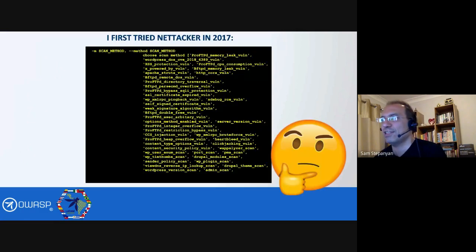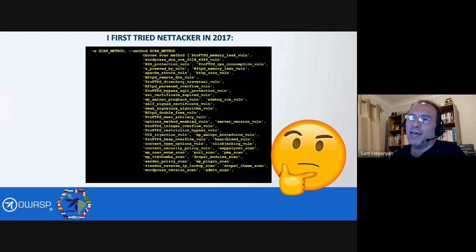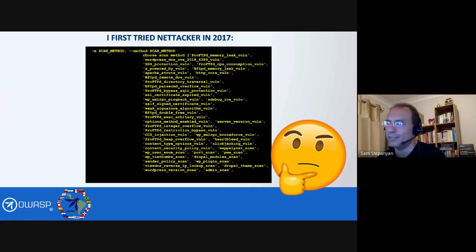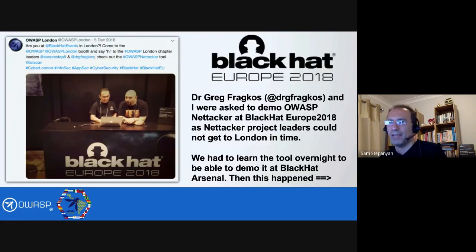I actually have an interesting history with Nettacker. The first time I tried it in 2017, I saw a new project appearing in the OWASP list of projects. I was really curious what it was. I tried to run it, I saw a whole bunch of things on the screen, I couldn't understand how it worked. So I just closed it and said I'm not interested — it's some sort of network tool and I'm an application security guy, why should I be bothered? But something happened in 2018.